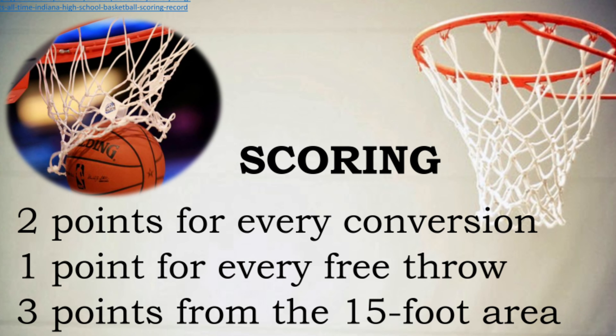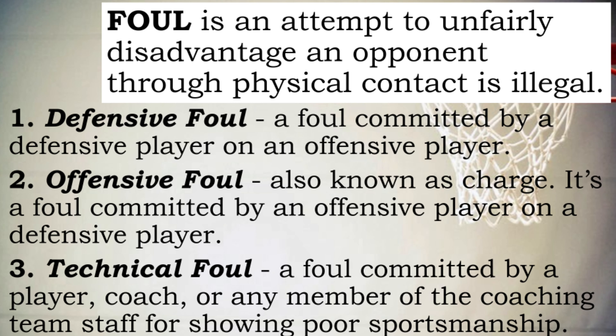Here are the scoring rules. Foul is an attempt to unfairly disadvantage an opponent through physical contact. Here are the kinds of foul: 1. Defensive foul — a foul committed by a defensive player on an offensive player. 2. Offensive foul — also known as a charge; a foul committed by an offensive player on a defensive player. 3. Technical foul — a foul committed by a player, coach, or any member of the coaching staff for showing poor sportsmanship.